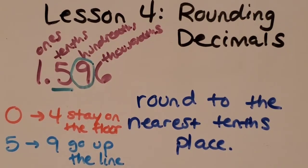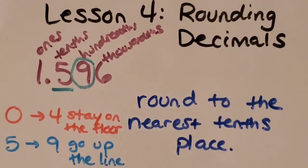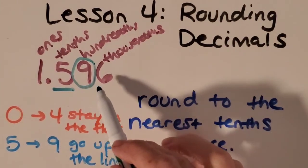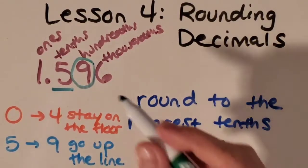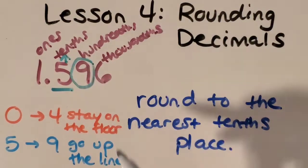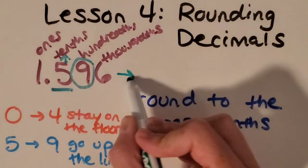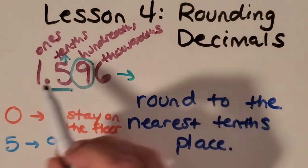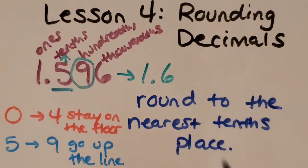And you can also do it as the song. Zero to four, stay on the floor, five to nine, go up the line. And since it's a nine, it tells us to go up the line. And we're going to put a little up arrow above the five. And what comes after five tenths? You got it. Six tenths. So it's going to be one and six tenths.